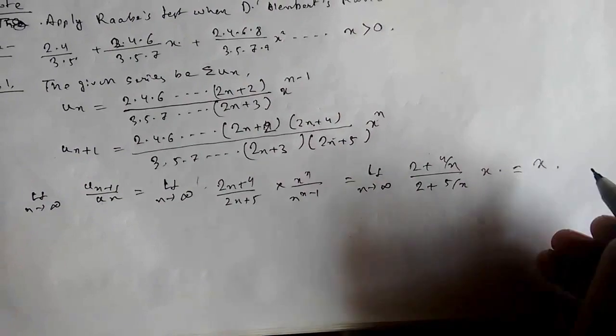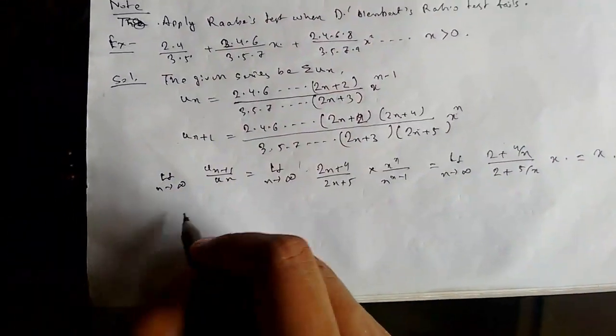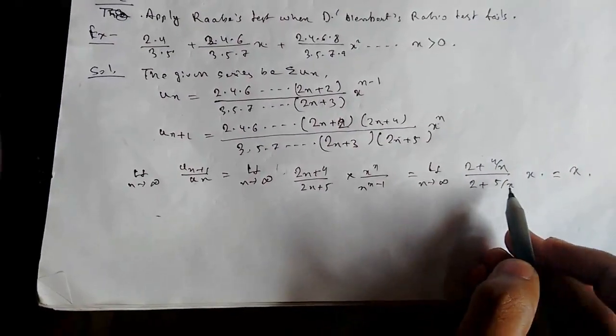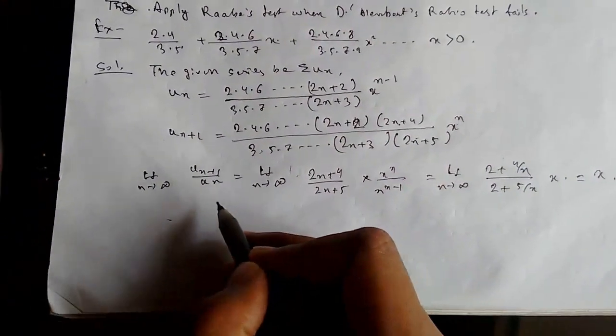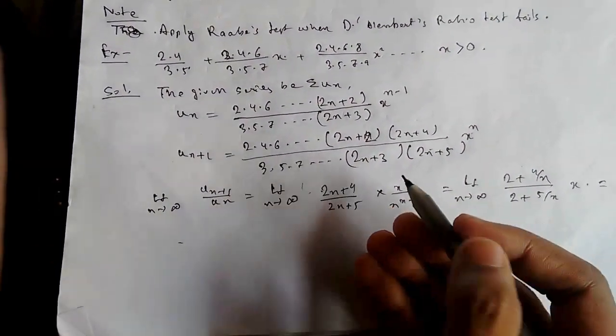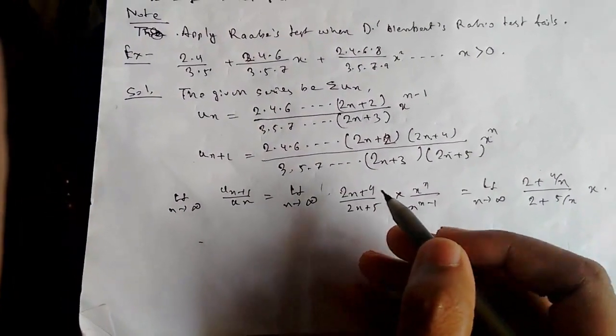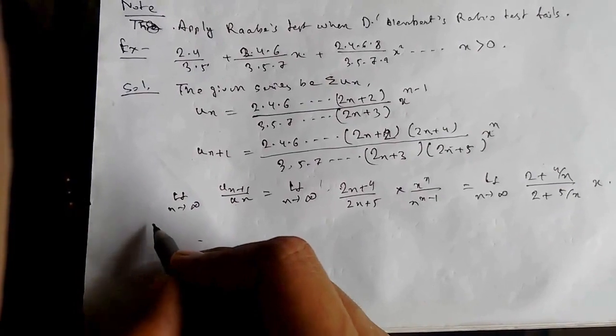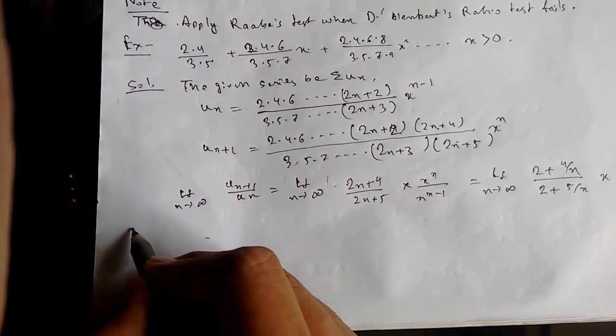So we can say that if x is less than 1, then it will be convergent. If x is greater than 1, then it will be divergent. So now we need to find out what will happen when x equals 1. To do that, let us apply Raabe's test.